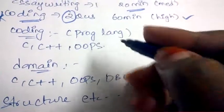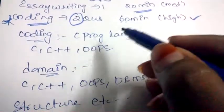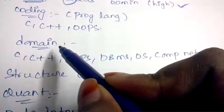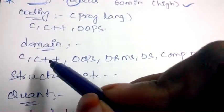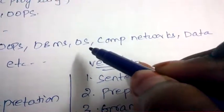Domain knowledge which you need to have for Microsoft is C, C++, OOPs, database management system, operating system, computer networks, data structures, etc.